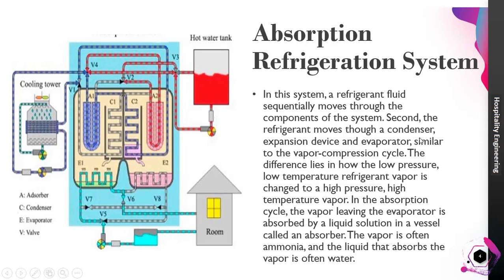The difference lies in how the low-pressure, low-temperature refrigerant vapor is changed to high-pressure, high-temperature vapor. In the absorption cycle, the vapor leaving the evaporator is absorbed by the liquid solution in a vessel called an absorber. The vapor used is ammonia, and the liquid that absorbs the vapor is water. The refrigerant being used is ammonia, and the absorbing liquid is water.